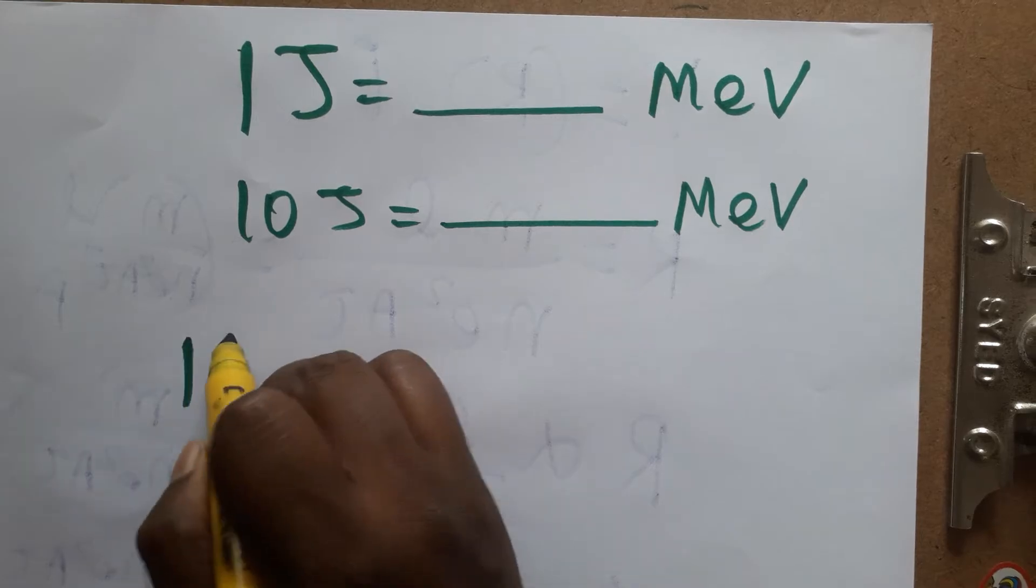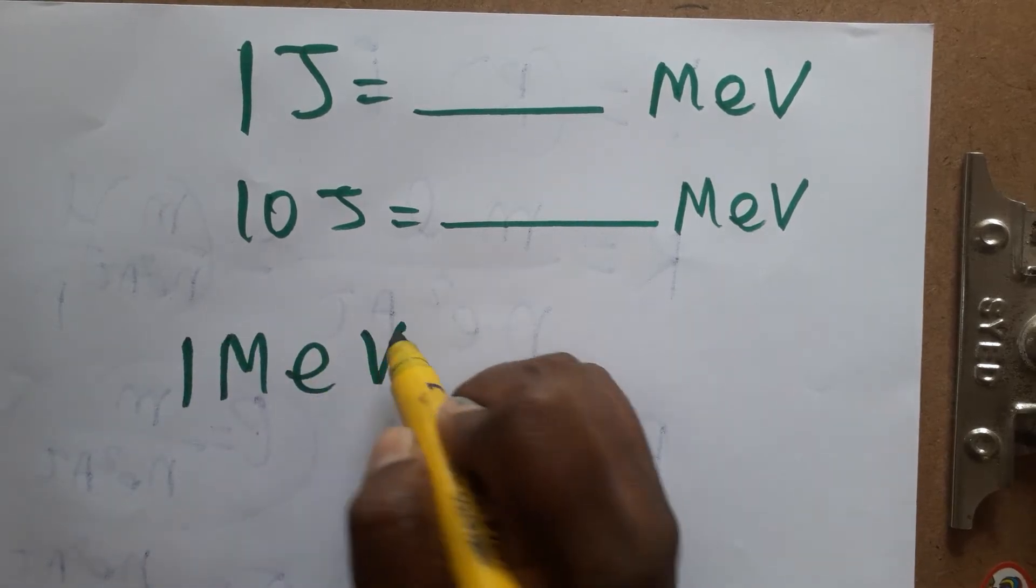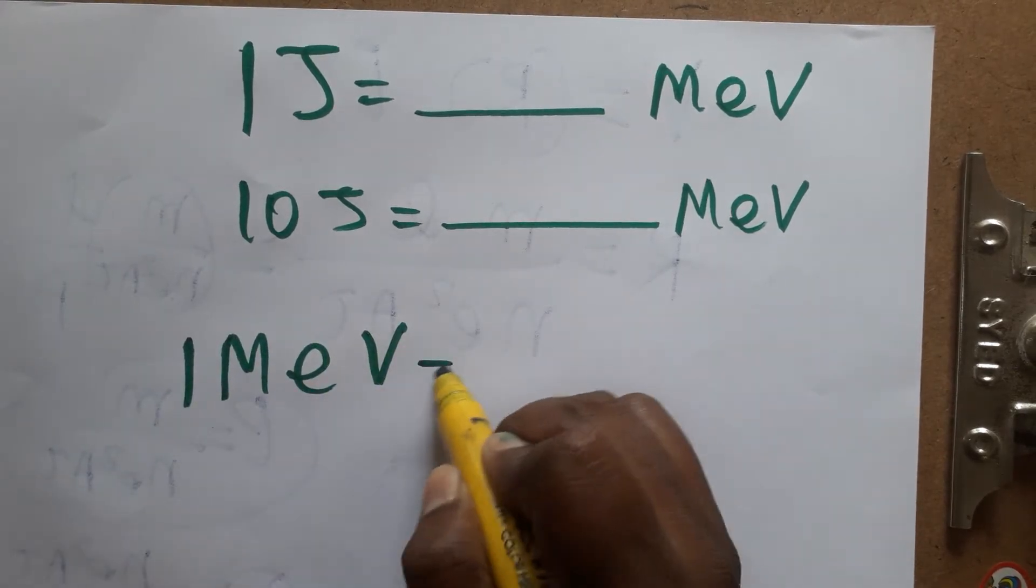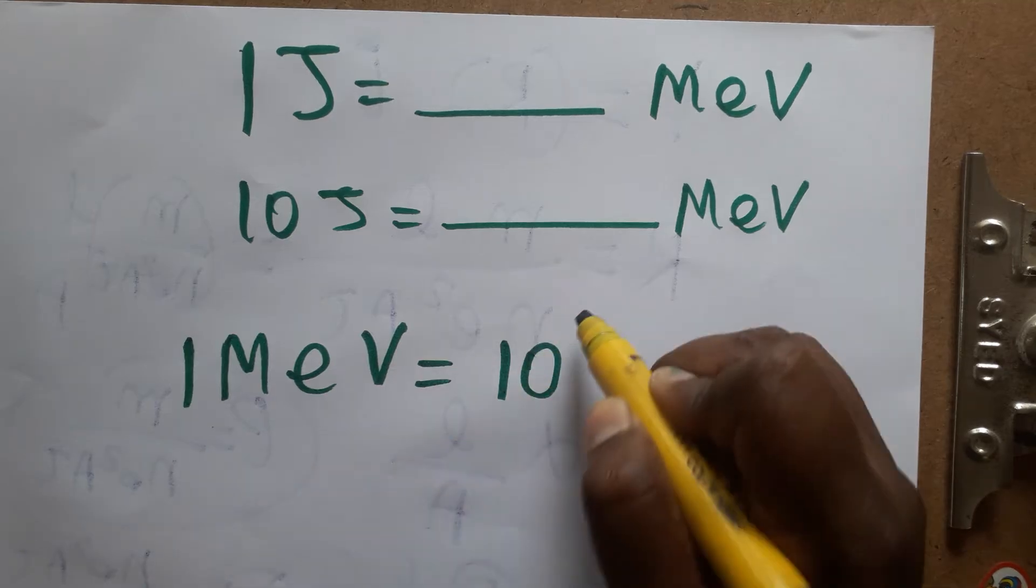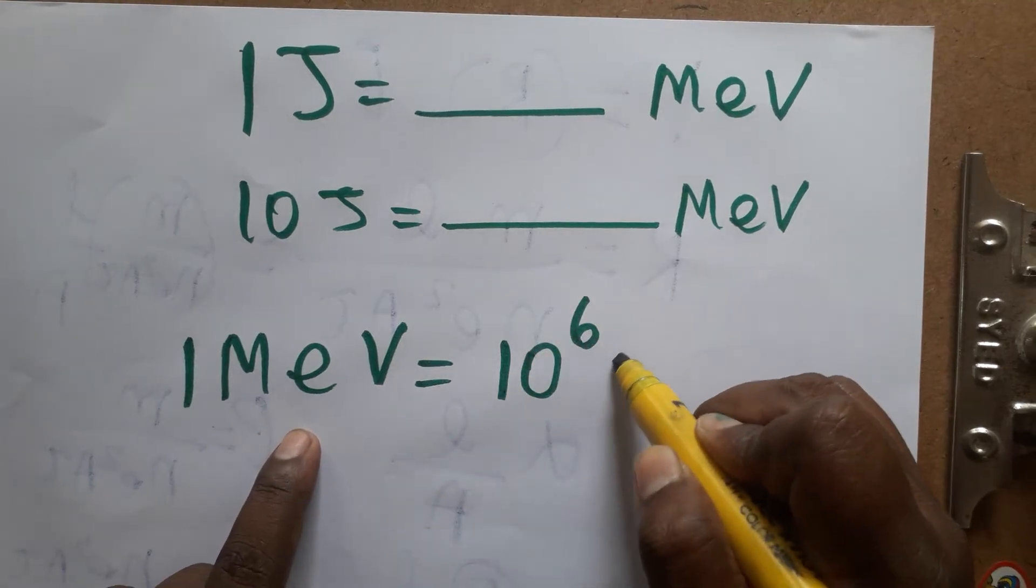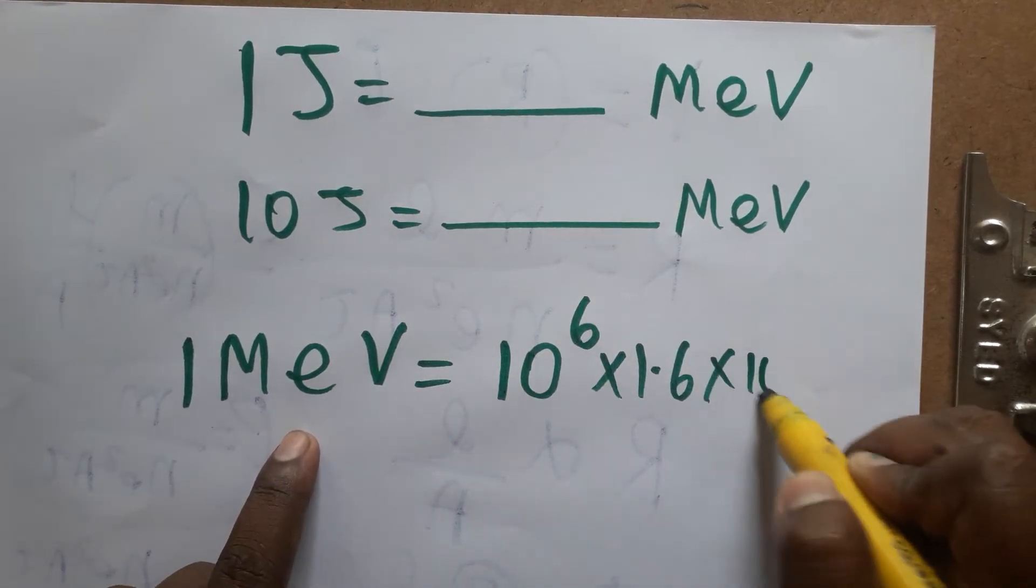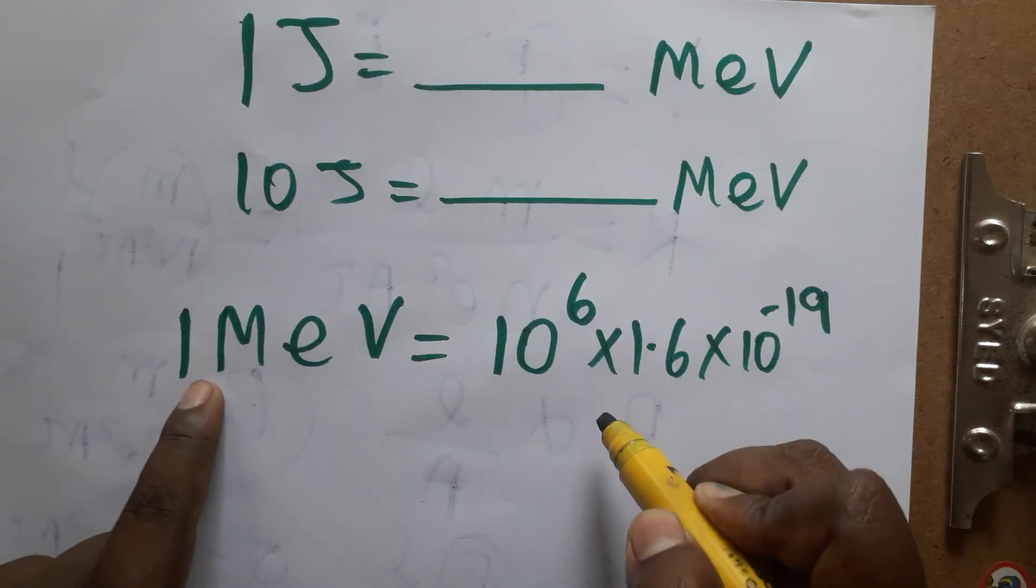Okay, first we should learn one MeV is dash, one mega electron volt. Mega is a million, also you can take it, it's 10 power 6. Electron is 1.6 into 10 power minus 19.